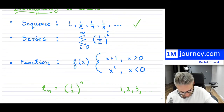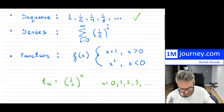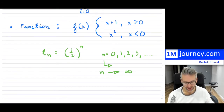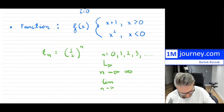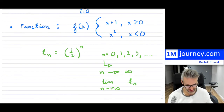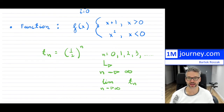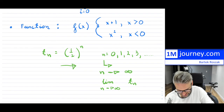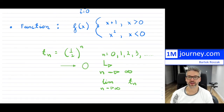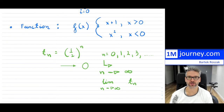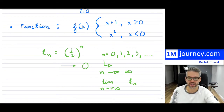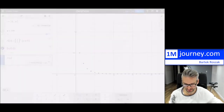As n goes to infinity, we designate this as: the limit as n goes to infinity of tₙ, where tₙ = (1/2)^n. This is basically going to tend towards zero. The limit of this sequence is zero. It never actually reaches zero — no matter how big you make n, it's still one over an extremely large number — but it never really gets to zero.